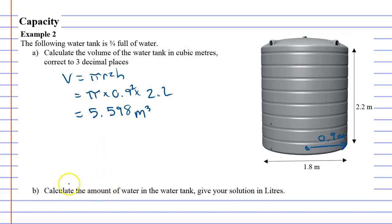It's when we move on to question B, it says calculate the amount of water in the water tank, and it wants you to give your solution in litres. Now, because it's three-quarters full, we're just going to go three-quarters and multiply that by 5.598 to see exactly how much water is in there.